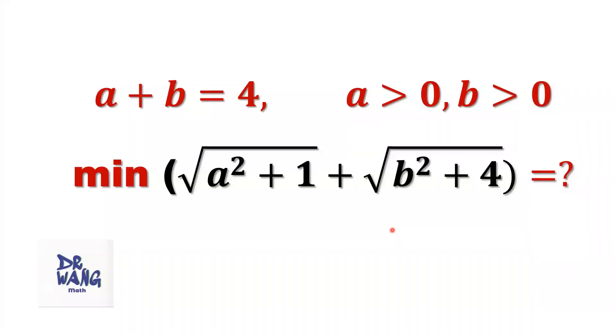Hello everyone, I'm Dr. Wen. Here is the question. a plus b equals 4. Both a and b are positive. We want to find the minimum of square root of a squared plus 1 plus square root of b squared plus 4.